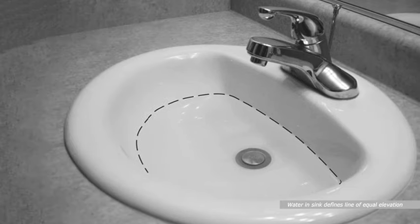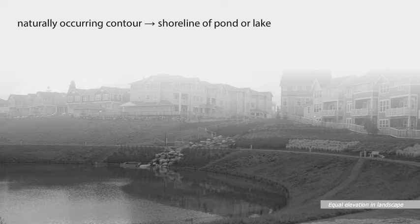Abstractly, water in any vessel, a bottle or a bathtub for instance, defines a line of equal elevation when undisturbed. The best example of a naturally occurring contour is the shoreline of a pond or lake.